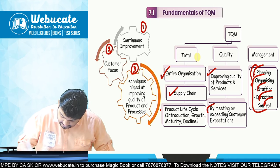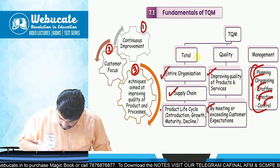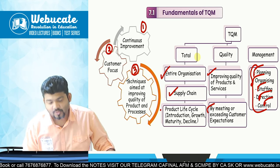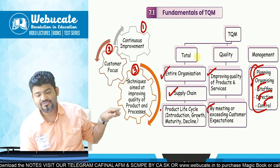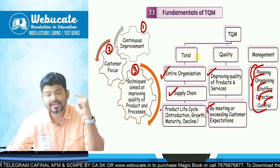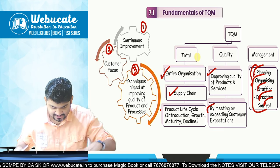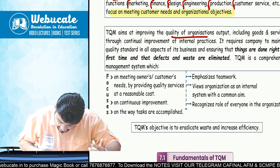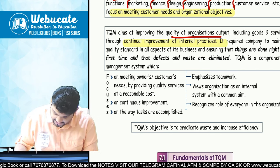TQM consists of three aspects: continuous improvement, customer focus, and techniques aimed at improving quality of products, services, and processes. These three work together to give you total quality management. Always remember: continuously keep improving, never settle. The eventual objective is improving quality of organization output including goods and services through continual improvement, maintaining quality standards, doing things right the first time, and eliminating defects and waste.